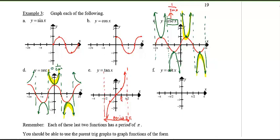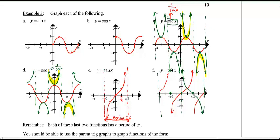Cotangent is the reciprocal of tangent. Drawing the tangent graph and applying the reciprocal: zeros become asymptotes, asymptotes become zeros, small values become large and large become small. The cotangent graph has a period of π as well. These are the six basic trig graphs you need to know, visualize, and memorize.